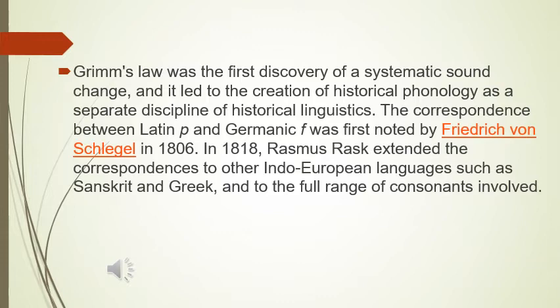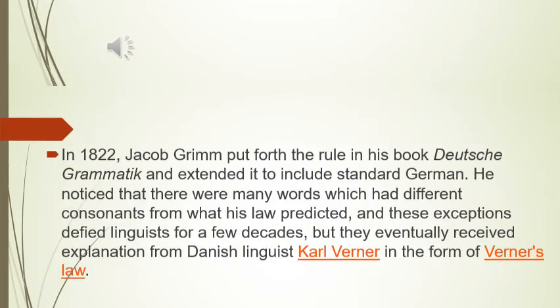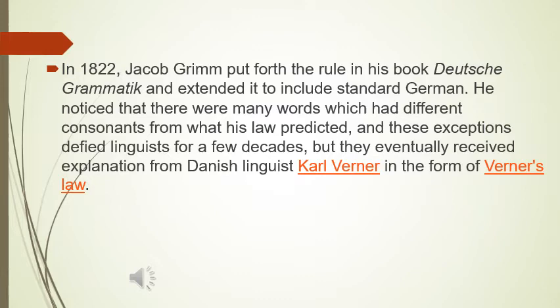Grimm's Law was the first discovery of a systematic sound change, and it led to the creation of historical phonology as a separate discipline of historical linguistics. In 1822, Jacob Grimm put forth the rule in his book on Deutsche Grammatik, extended to include standard German. He noticed that many words had different consonants from what his laws predicted, and these exceptions defied linguistics for a few decades, but they eventually received explanation from Danish linguist Karl Verner in the form of Verner's Law.